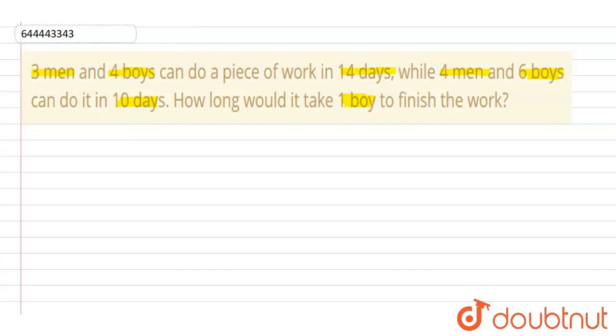Let us consider m is the efficiency of men and b is the efficiency of boy. Therefore, according to the given condition, we have (3m + 4b) × 14, because in total they require 14 days to complete the work. In this type of question, always consider work is equal to 1.